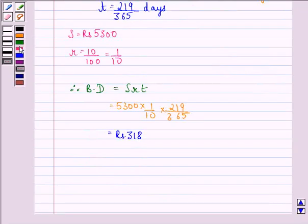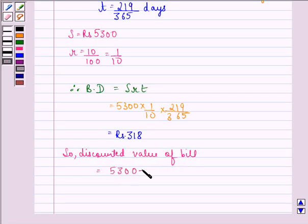So, discounted value of the bill equals 5300 minus 318, that is equal to rupees 4982.